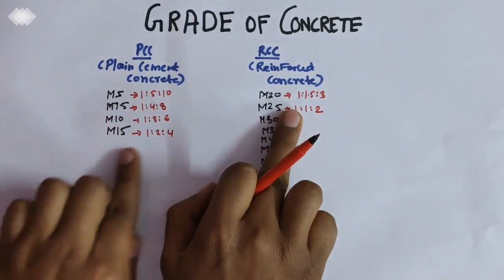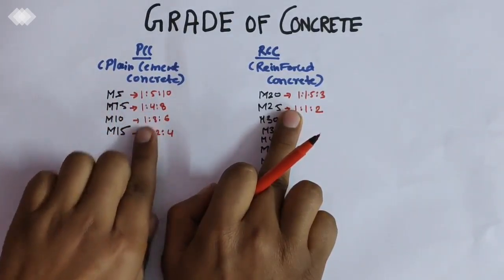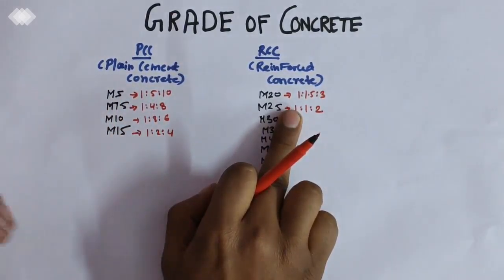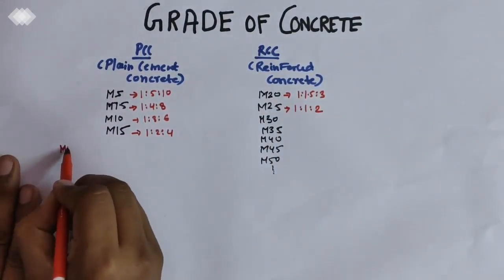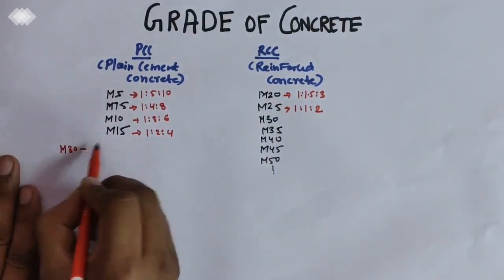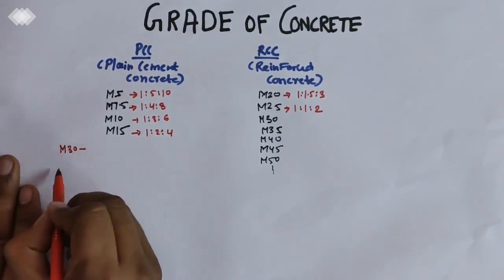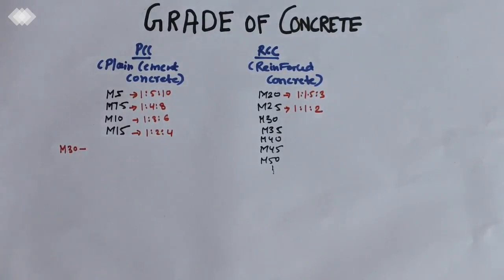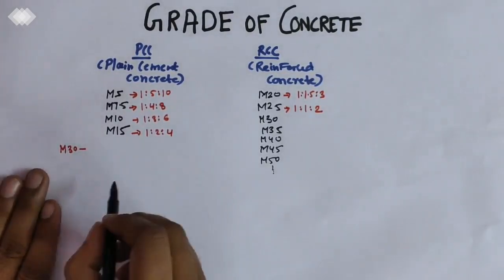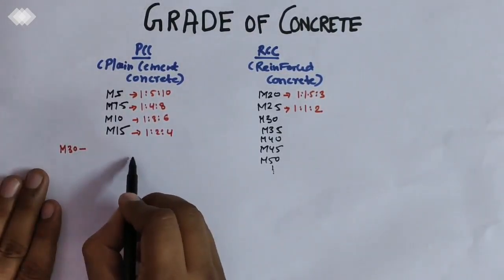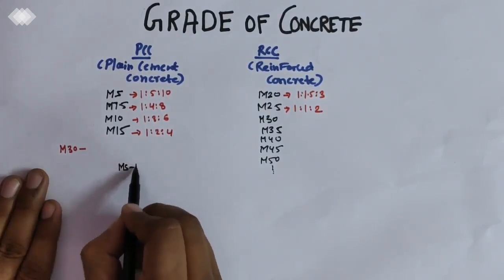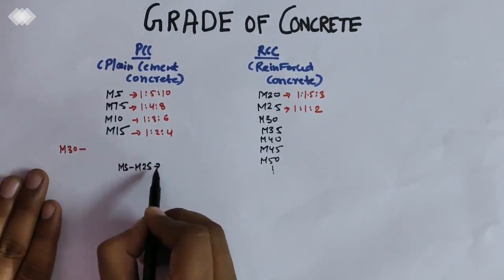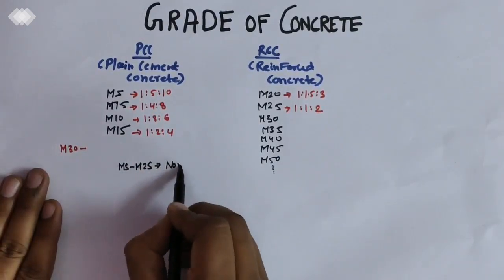From M5 to M25, these grades of concrete have fixed ratios. From above M25, M30, M35, and so on, we will use design mix ratio. There are two types: M5 to M25 is based on nominal mix ratio.